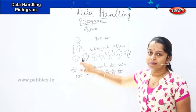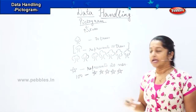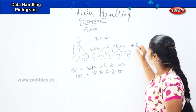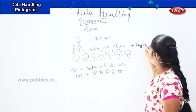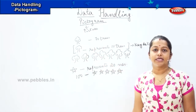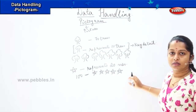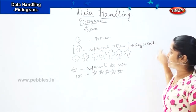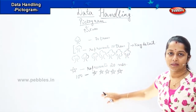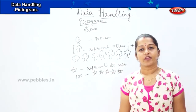So in a pictogram, the picture tells us how many numbers it is representing, and this particular information is called the key detail. That is, the key detail tells us what this picture is actually symbolizing.